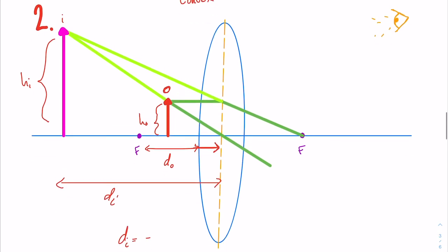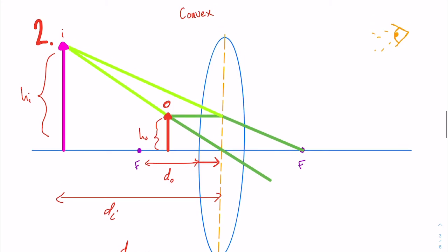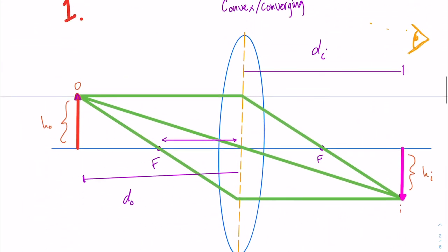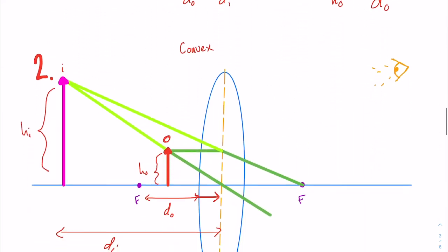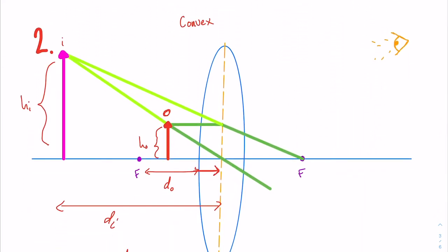So in this second example, it's different because we have a virtual image instead of a real image. Another interesting thing is whether or not the image height is positive or negative. If the image goes down below the axis, we're going to have a negative HI. In this case, since it's going above the axis, HI would be positive.